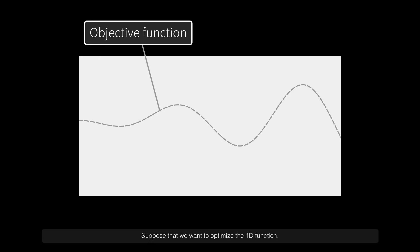Suppose that we want to optimize a 1D function. First, the system samples an arbitrary point and observes its function value.